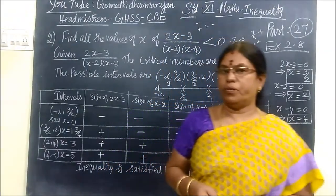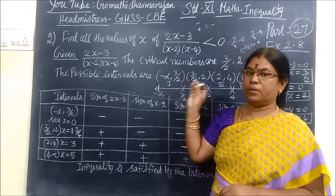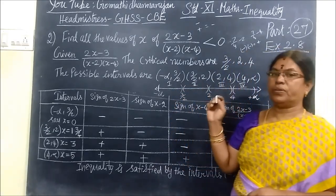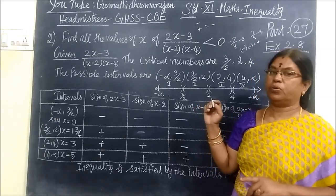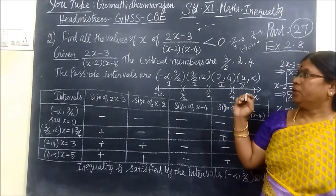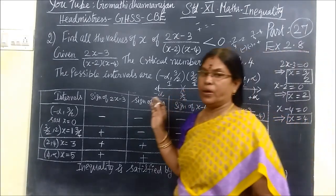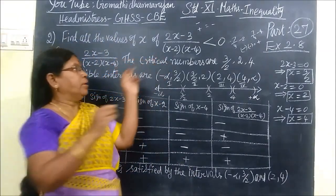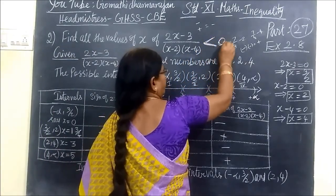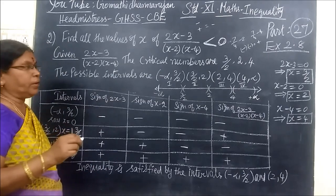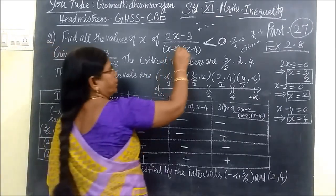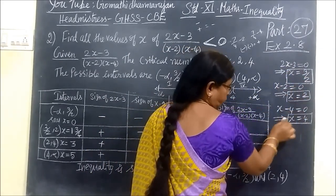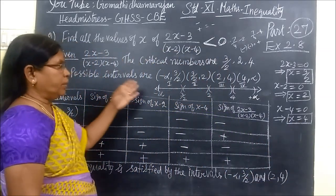Good evening students, now we want to see Part 27 for Standard XI, Exercise 2.8. In the last class we have seen Exercise 2.7, the first question: find all the values of x of inequality. We are seeing inequality chapter, Exercise 2.8. The second sum, less than zero. The critical numbers are x equal to 3 by 2, x equal to 2, then x equal to 4.